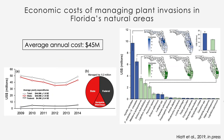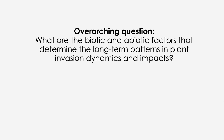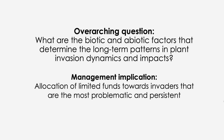At the same time, we're spending more and more money managing these plant invaders. A paper coming out from our lab reports how much it's costing in the state of Florida to manage invaders in natural areas alone — $45 million per year focused on about 10 invaders, with hydrilla being the most costly. This leads to the overarching question: what are the biotic and abiotic factors that determine long-term patterns, dynamics, and impacts of plant invasions, and how do we allocate limited funds toward the most problematic and persistent invaders?